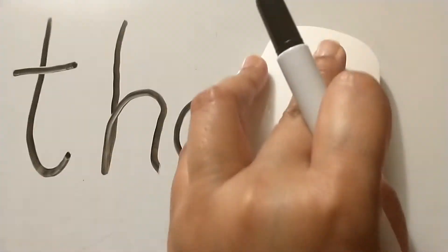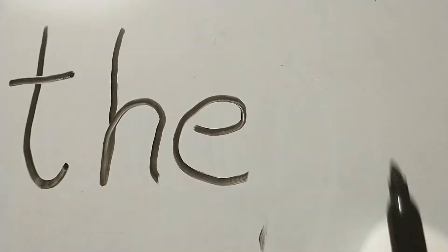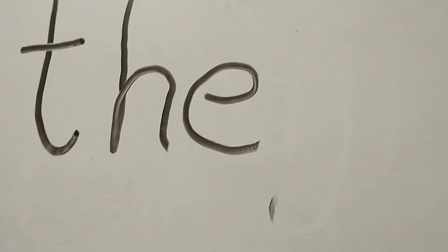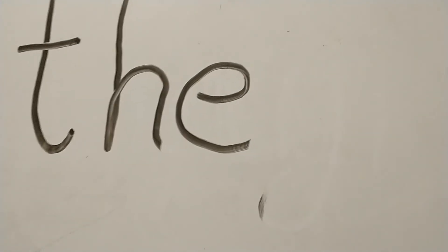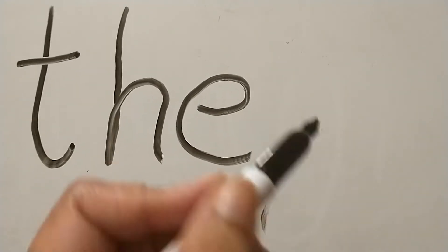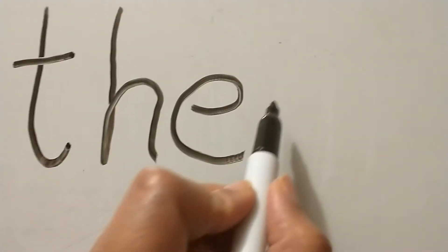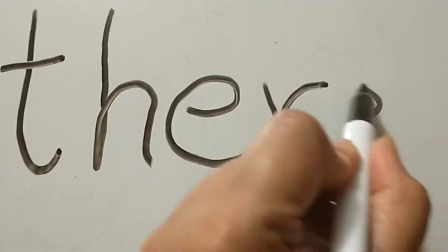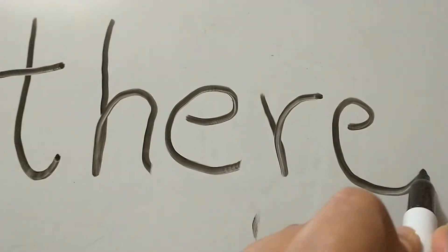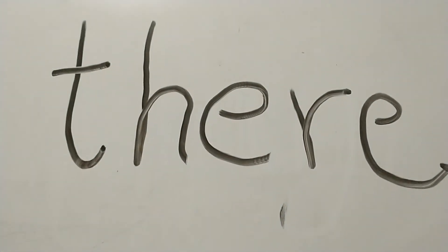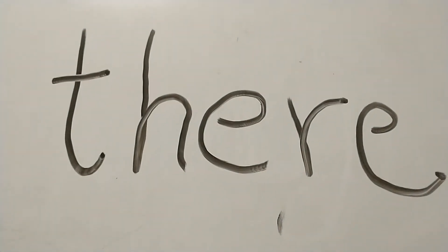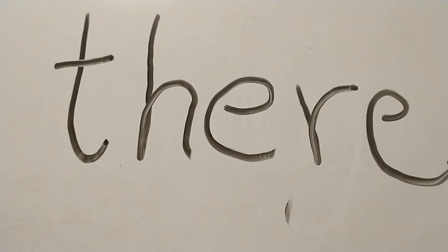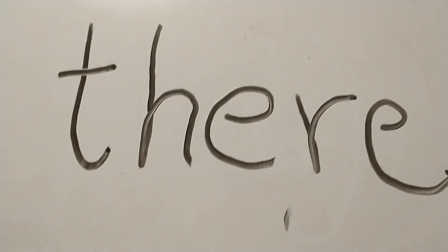Then we're going to keep the TH in place and put AIR after it, which makes TH-ERE: THERE.